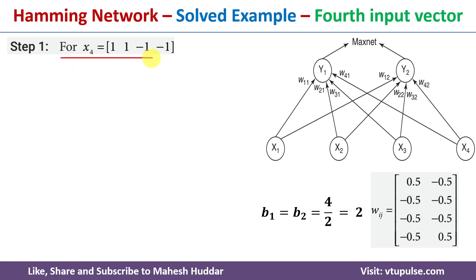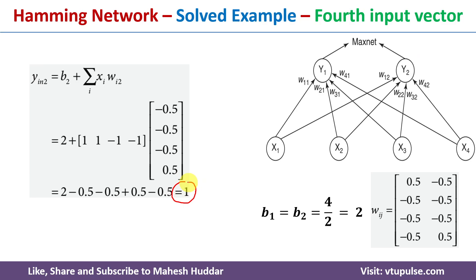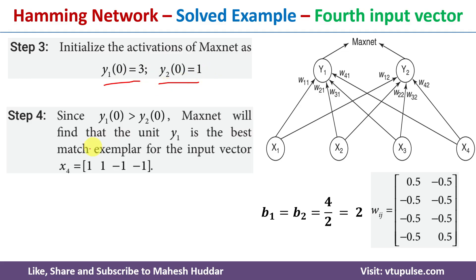Now we consider the fourth input vector X4. Following the same procedure, the net input at Y1 is 3 and the net input at Y2 is 1. So Y1(0) = 3 and Y2(0) = 1. Since Y1 has the higher activation, X4 is assigned to the first exemplar vector, i.e., cluster Y1.